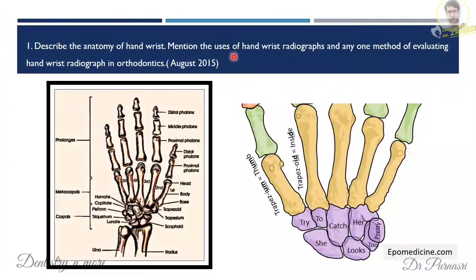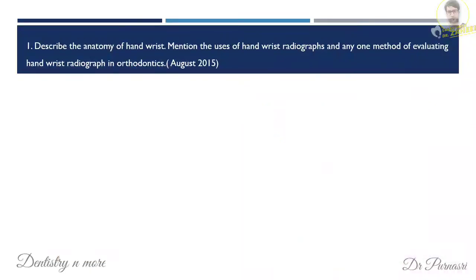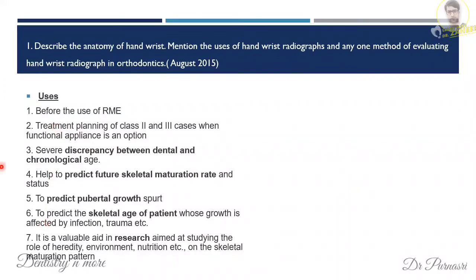Uses of hand-wrist radiographs: mainly used when there is a discrepancy between dental and chronological age; before rapid maxillary expansion; treatment planning for class 2 and class 3 cases when functional appliance is an option; to predict future skeletal maturation rate and growth status; to predict the pubertal growth spurt and skeletal age; and in research.